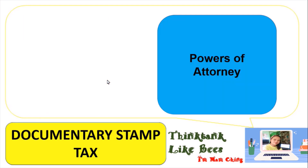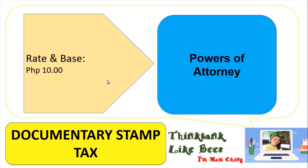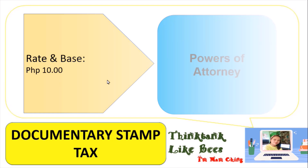For powers of attorney, to have your document authenticated, a documentary stamp tax of 10 pesos must be affixed. The rate and base is a fixed 10 pesos — any document that requires a power of attorney must pay a documentary stamp tax of 10 pesos.